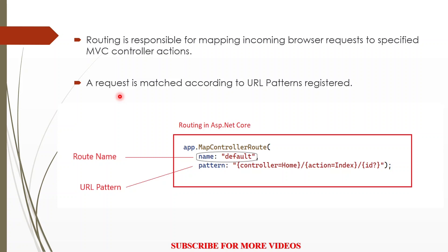Routing is responsible for mapping incoming browser requests to specified MVC controller actions. Whenever a request is made from a browser to our application, it is matched according to the URL patterns registered in the application. In ASP.NET Core, we register routing using the MapControllerRoute method, which takes two parameters: one is name and the other one is pattern.